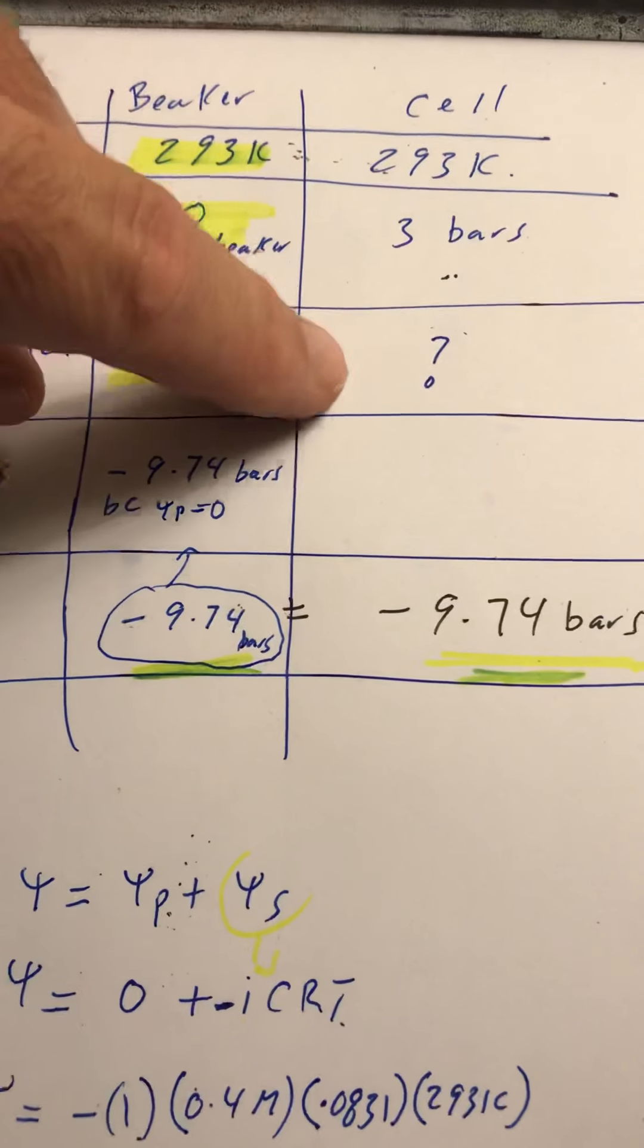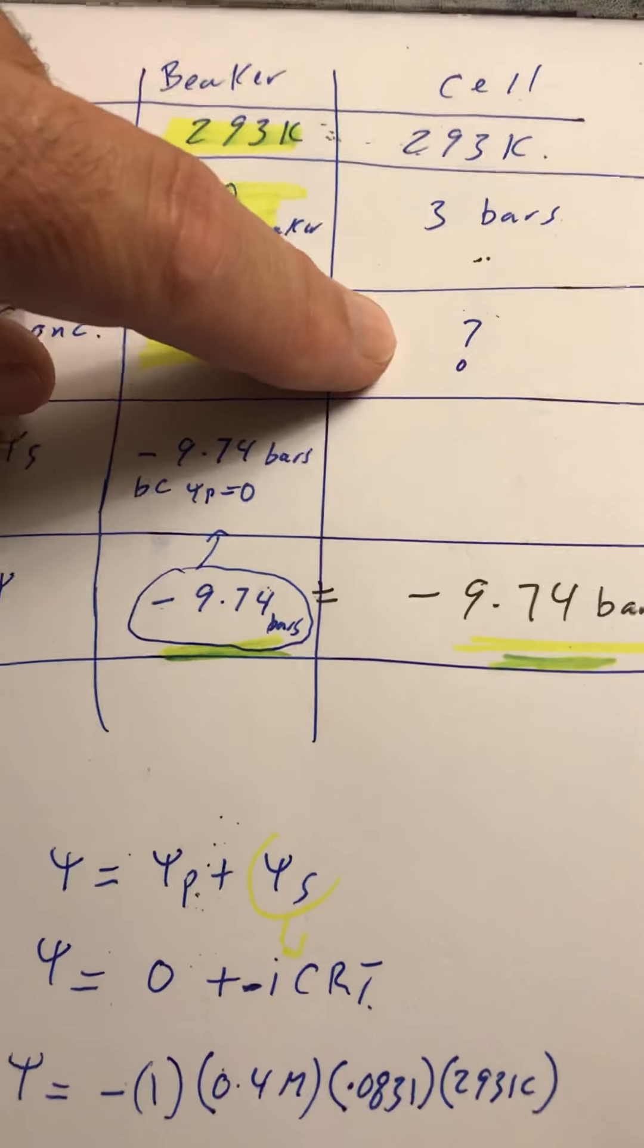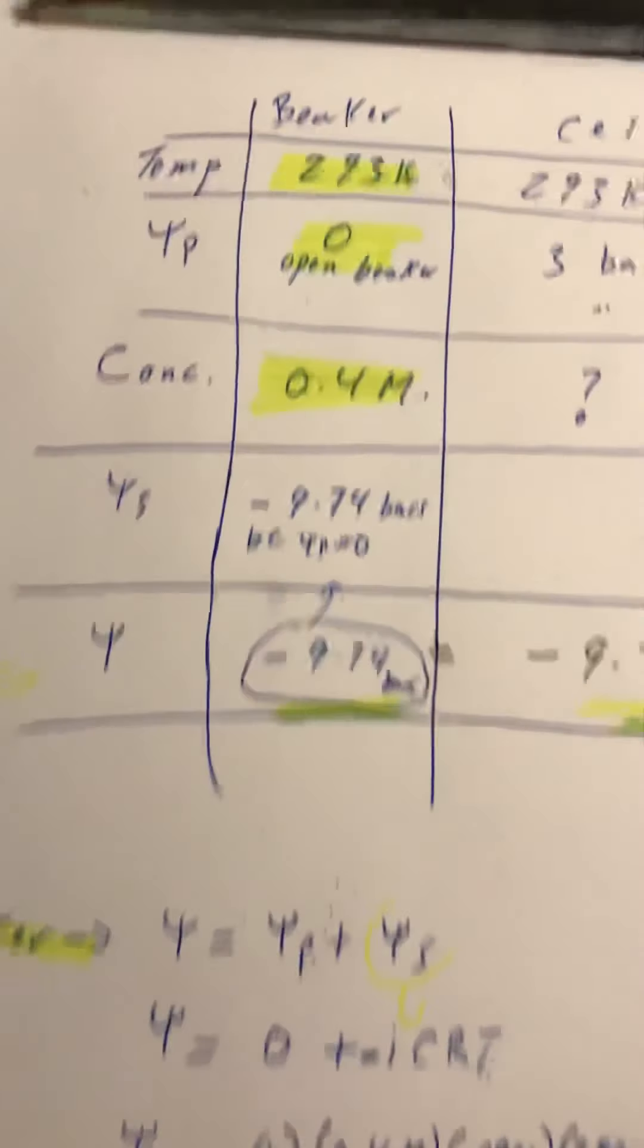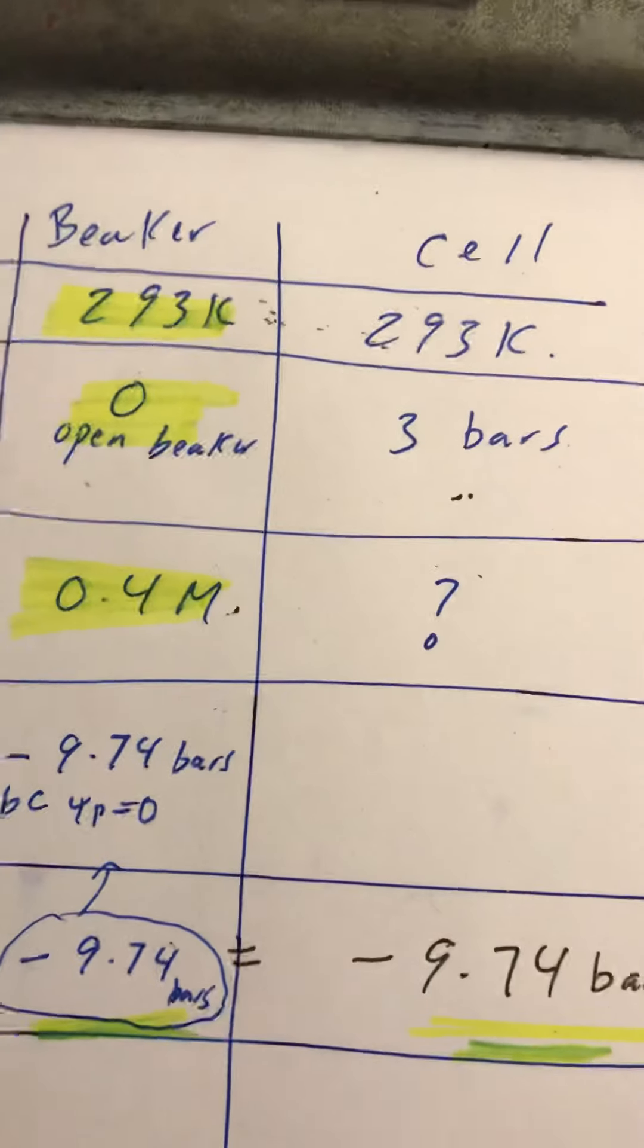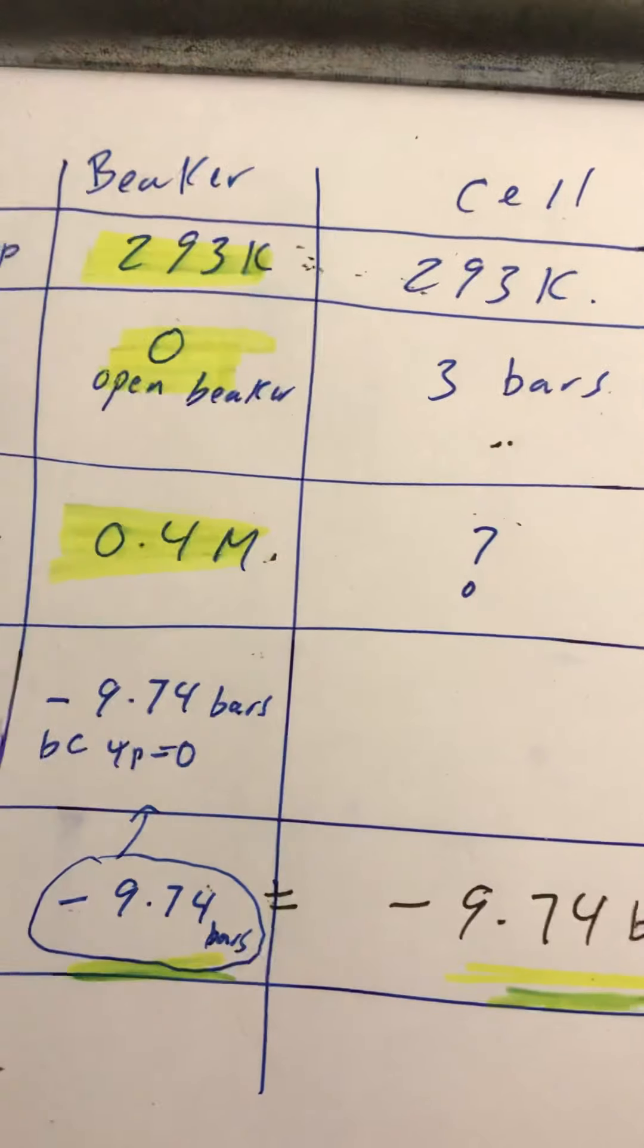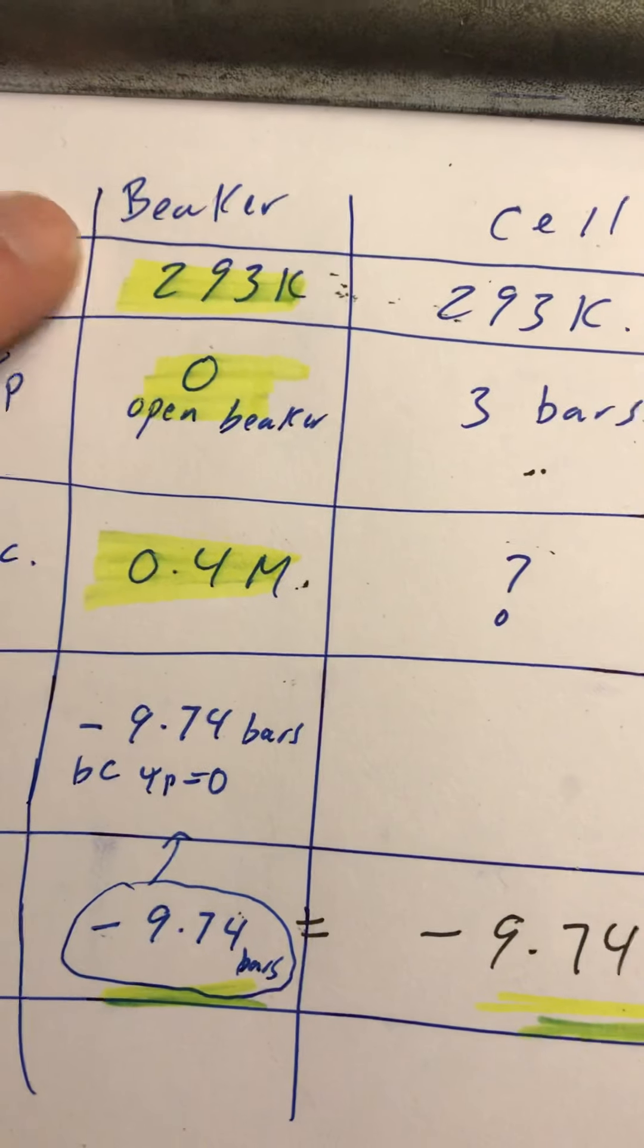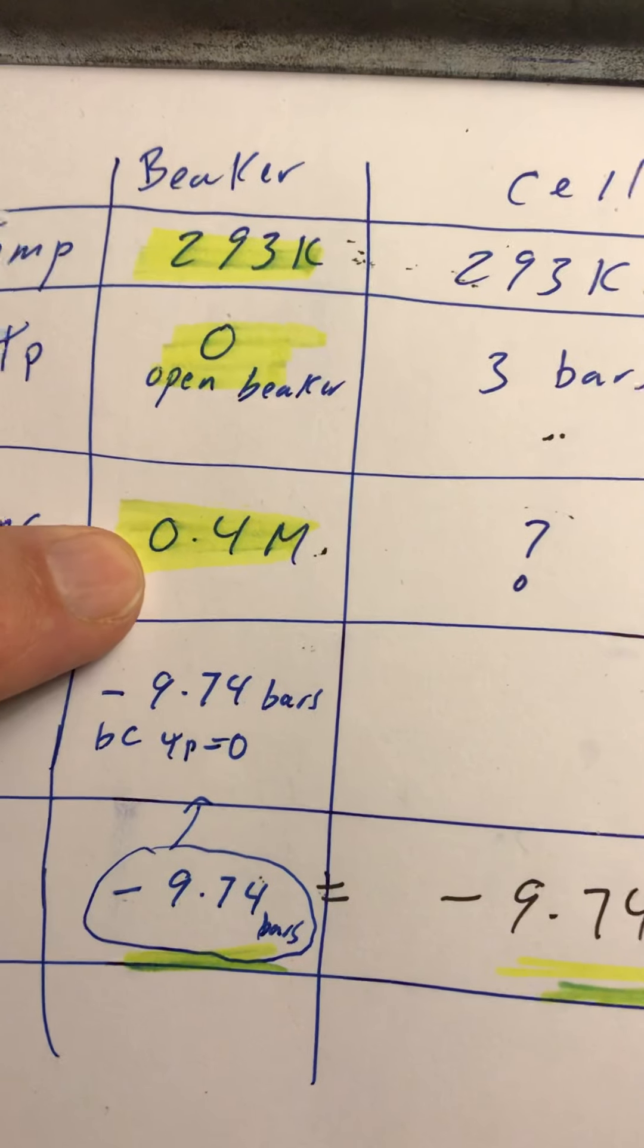I'm being asked what is the concentration of sucrose outside the cell. The first thing I need to do is figure out which of the two, the cell or the beaker, has more information. I have three pieces of information for the beaker, I only have two for the cell. Using the equation iCRT, I have C, R is a constant, T I'm given, that'll work.